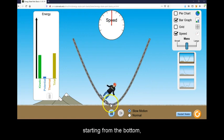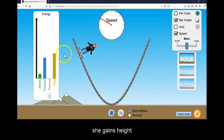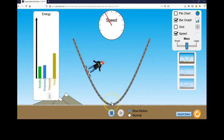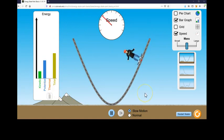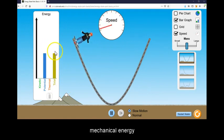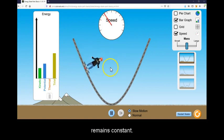Conversely, starting from the bottom, she gains height and potential energy and loses speed and kinetic energy. Her total mechanical energy remains constant.